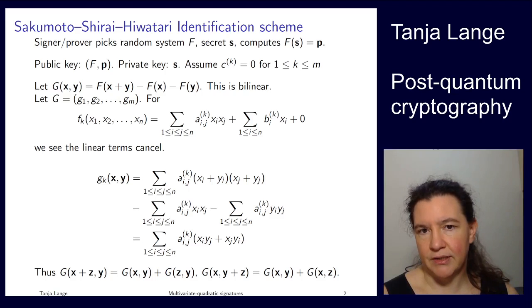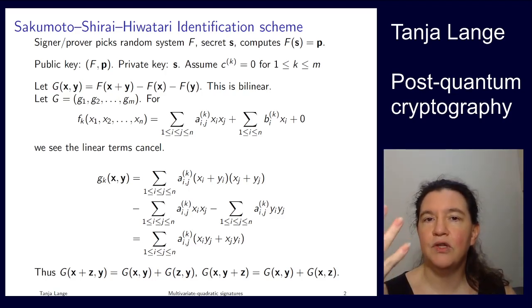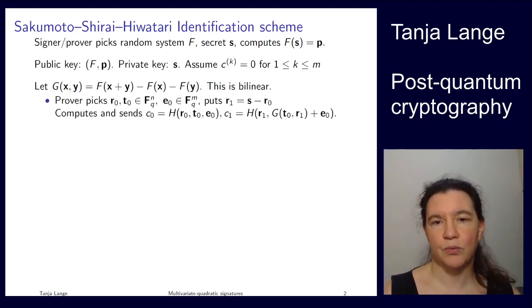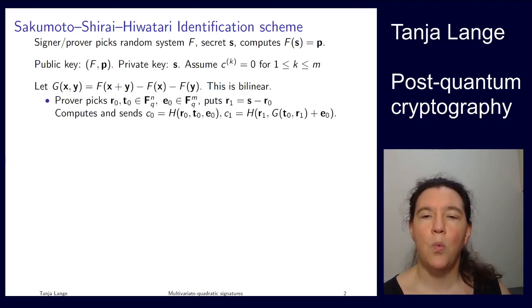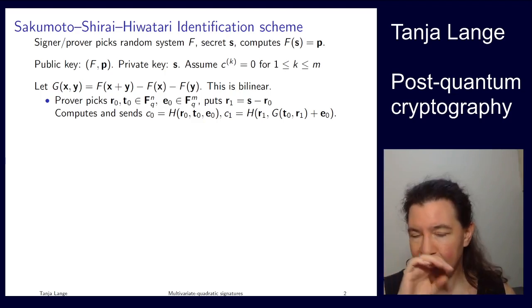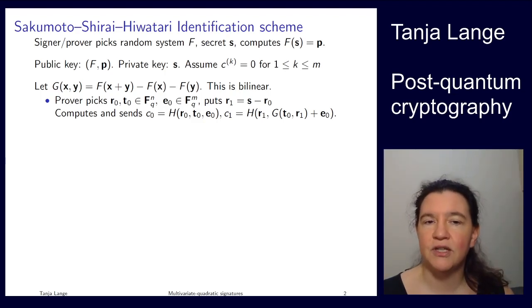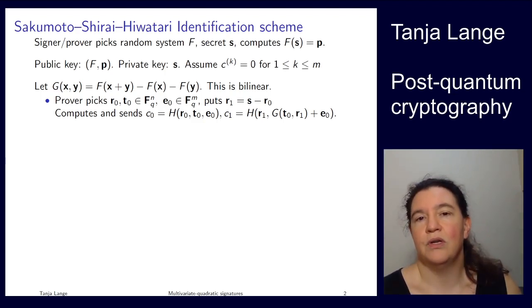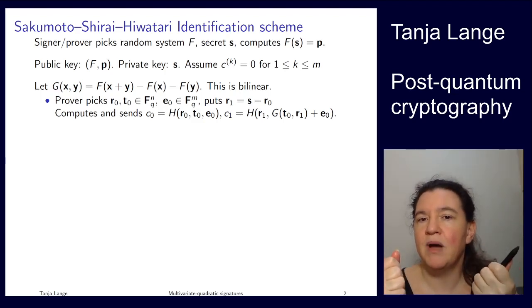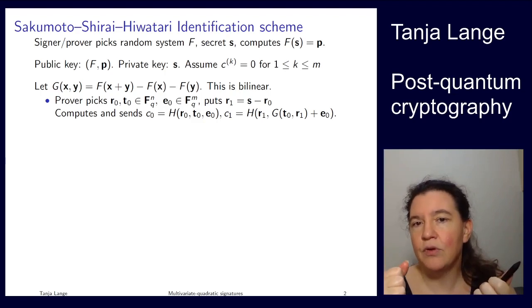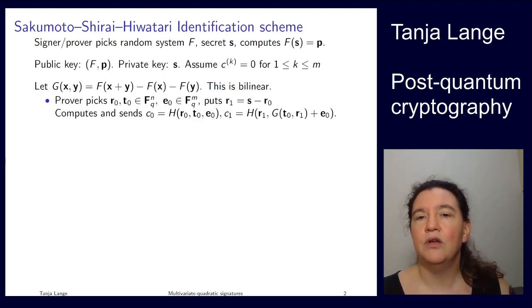Now let's look at what this identification scheme actually does. Keep in mind, I'm supposed to prove that I know s without giving you any information. Let's first run through how it works, then show why it works, and then argue why this is actually a secure identification scheme. In order to initiate a proof, me, the prover, I'm picking several variables. I'm picking r_0 and t_0 of length n. Those are going to be inputs to this function F or G. And I'm picking e_0 of length m. So that's going to be on the output side. I'm also relating r_0 to an r_1 using my secret.